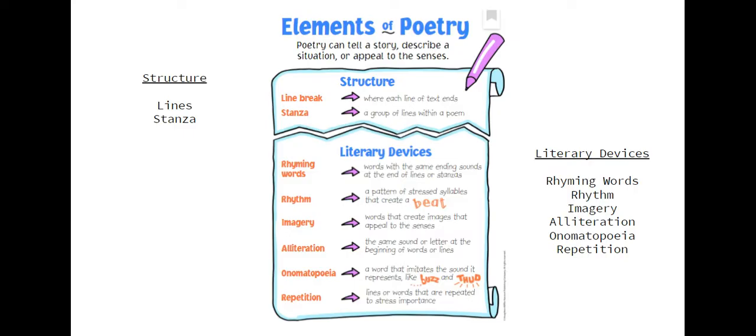Let's explain a little bit. When we talk about the lines, you will see as a poem is written there are lines. You can actually count the lines. A line is where each line of text fits. Then you have the stanza, which is a group of lines within a poem. A stanza is much like a chapter in a book.